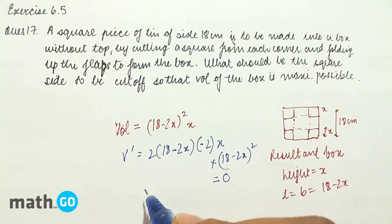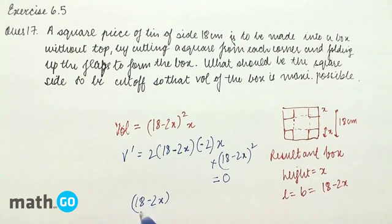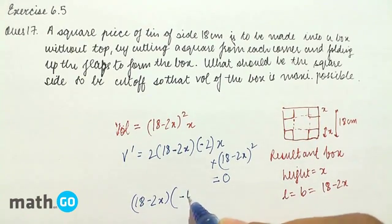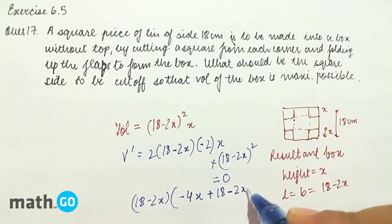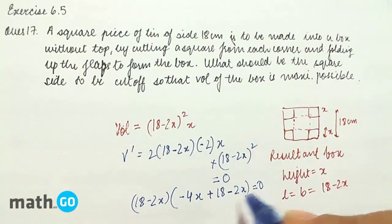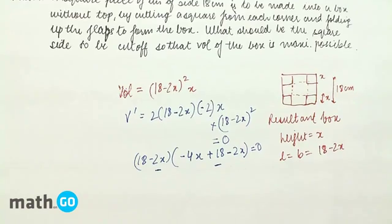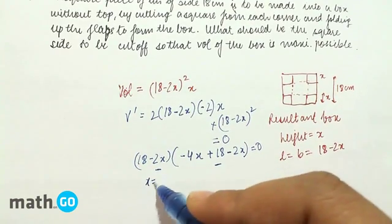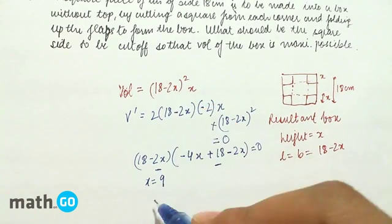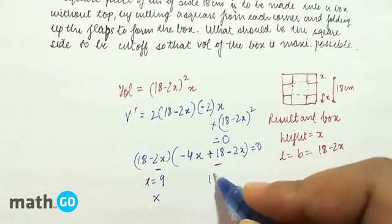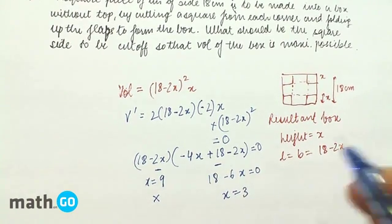In keeping this equal to 0, we see (18-2x)(-4x + (18-2x)) equals to 0. If we keep x equals to 9, volume will become 0, so this is not a valid option. 18-6x equals to 0 will give x equals to 3.